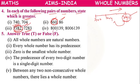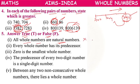For 839 and 6139: 6139 has a higher thousands digit, so 6139 is bigger. True or false: 'All whole numbers are natural numbers' — False, because 0 belongs to whole numbers but not to natural numbers.